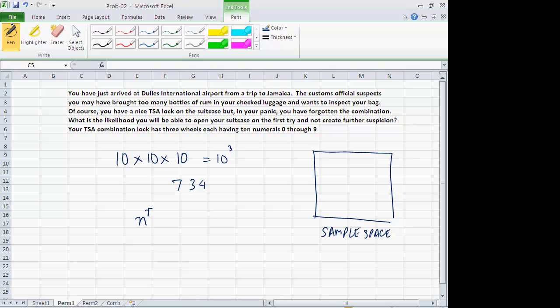So the likelihood that you will be able to open your suitcase on the very first try is simply 1 over 10 to the 3. That assumes that all alternatives are equally likely. The probability of opening it on the very first try is 1 over 10 to the 3. This is permutation with repetition.